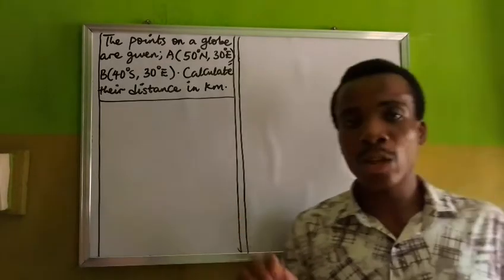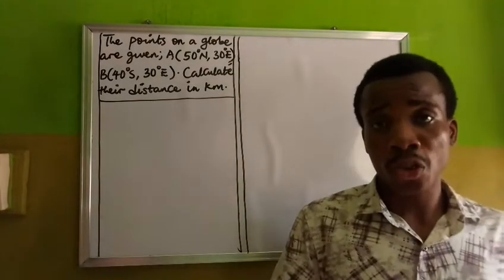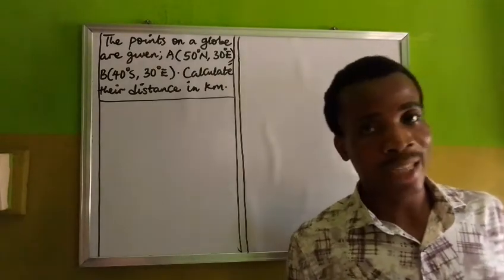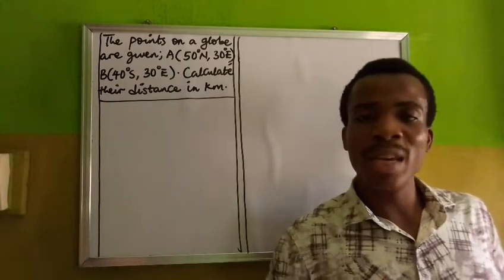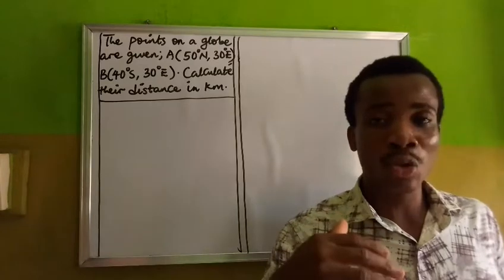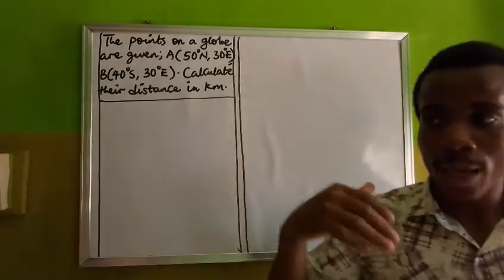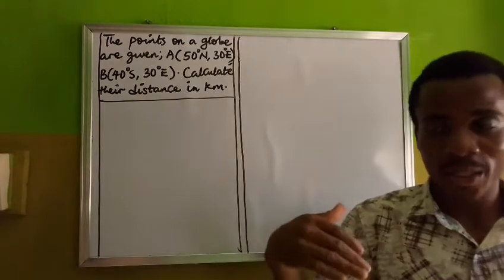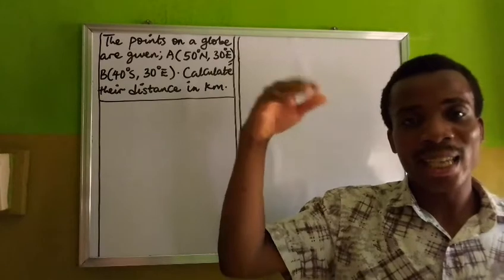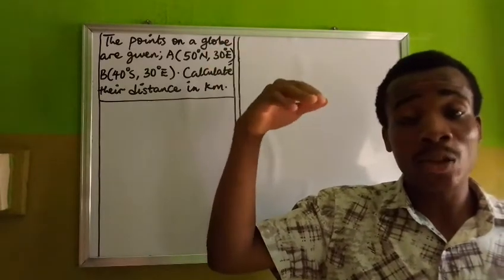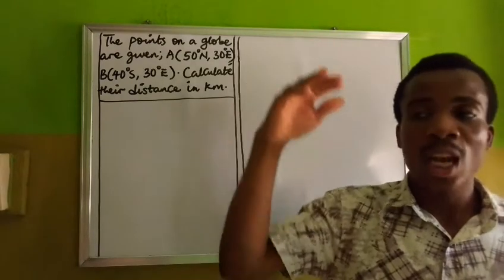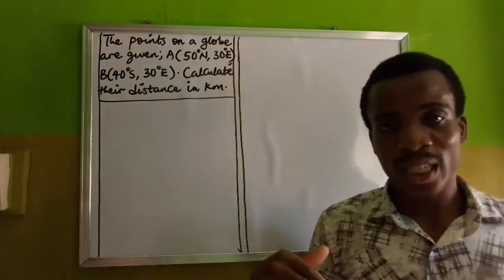Before I proceed, I would like to walk you through some basics on longitude and latitude. Latitudes are horizontal lines on the globe, and we have the main latitude, which is called the equator. It divides the sphere or globe into two parts — up and down. The up is the north and the down is the south. So every latitude you see above are northern latitudes, while every latitude you see below are southern latitudes.